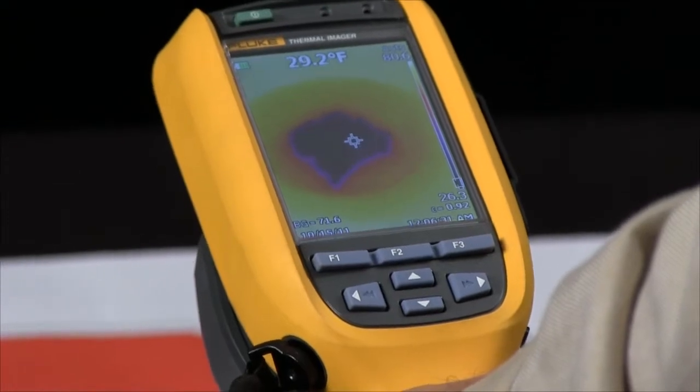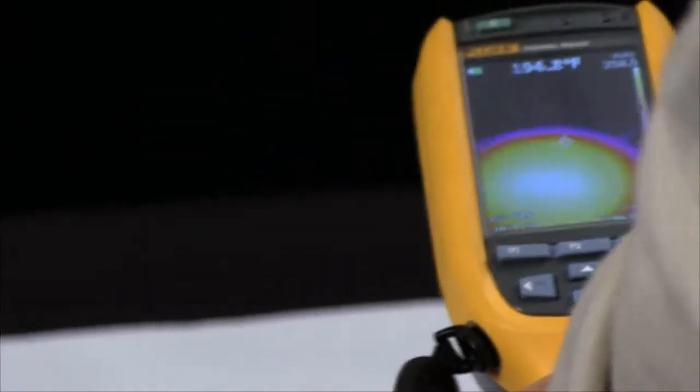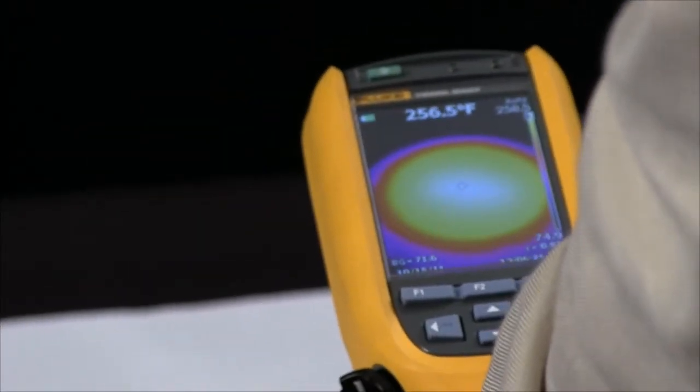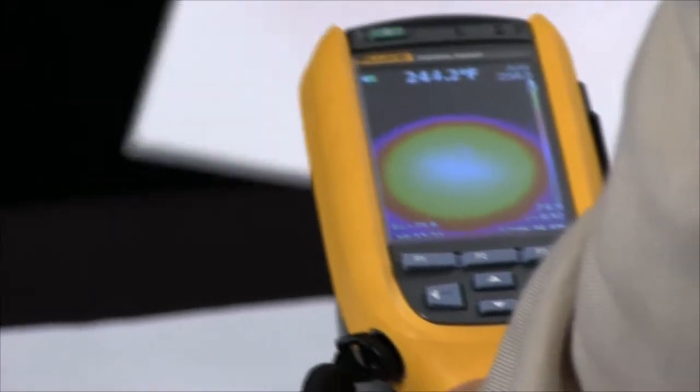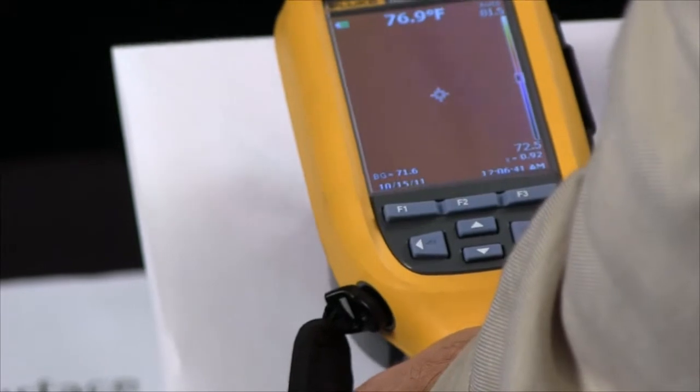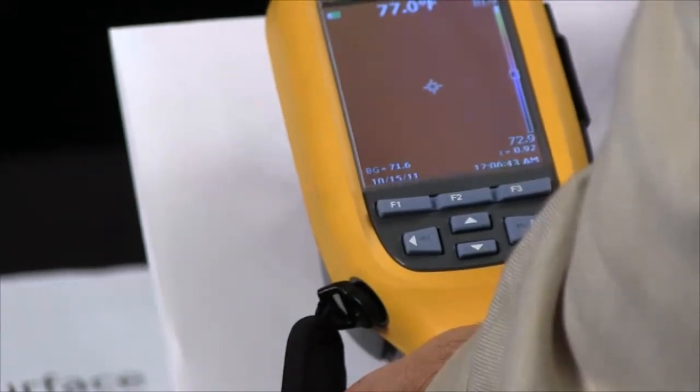I move over here to my hot plate and I'm reading about 260 degrees, but simply taking a piece of paper, placing it in front of the lens, brings me back to ambient or room temperature, so I'm not able to see through the paper.